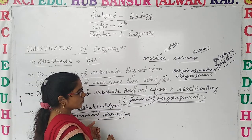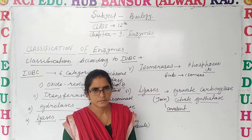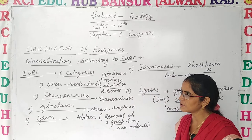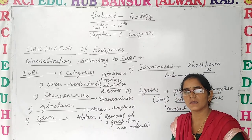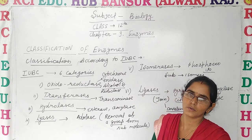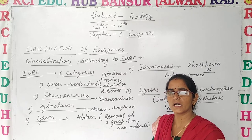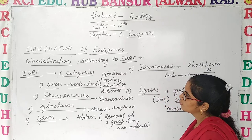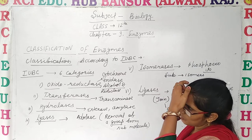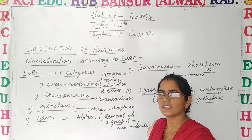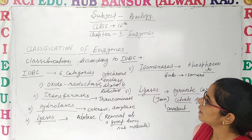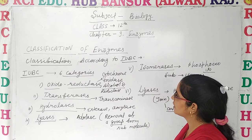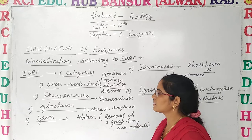Those short names are known as recommended names. Now let's talk about IUBC, the International Union of Biochemistry, and its classification of enzymes. It has divided enzymes into 6 major categories.